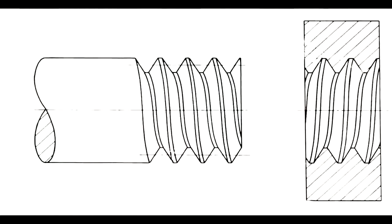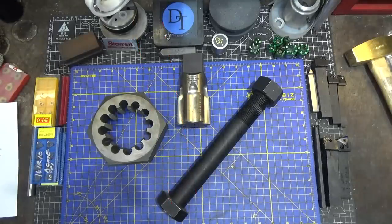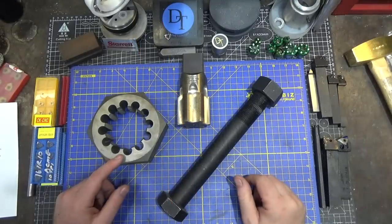Looking at a set of threads, you notice the slope — that is called the lead angle. The shallower the slope, or the higher the thread count in threads per inch, or smaller fractions of a millimeter per thread for metric, the greater the mechanical advantage while tightening. The trade-off is similar to gears: you have to complete more rotations of the nut to achieve the same tightening forces.